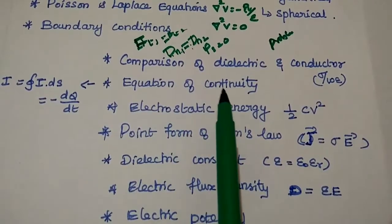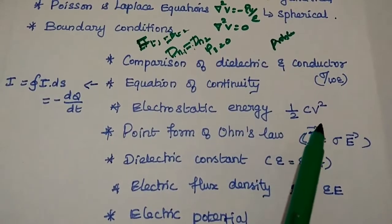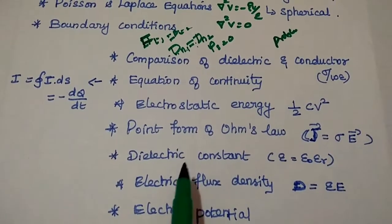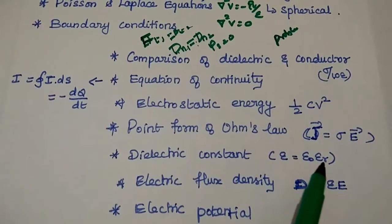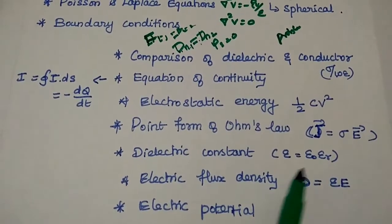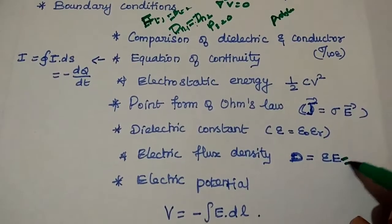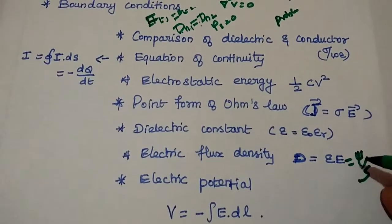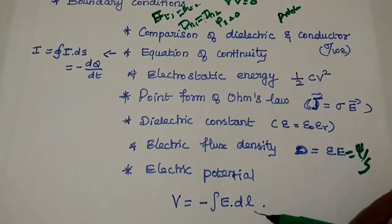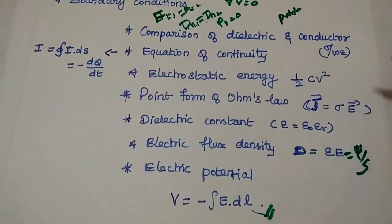The next topic is the equation of continuity. Electrostatic energy is represented as (1/2)CV². Ohm's law is J equal to sigma E. Dielectric constant is epsilon-naught times epsilon-r, where epsilon-naught is a constant and epsilon-r is the relative permittivity. Electric flux density: D equals epsilon times E, also represented as psi over S, that is flux per area. Electric potential is V equal to minus the integral of E dot dL. These are all important two-mark questions.